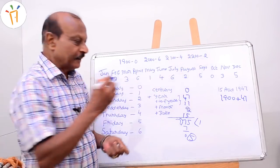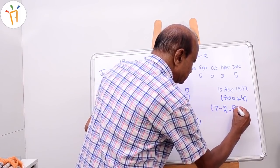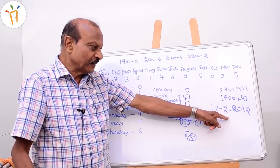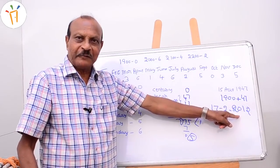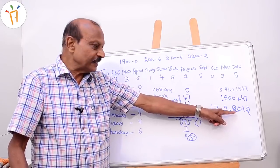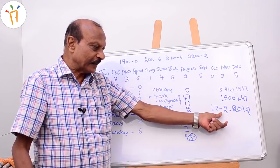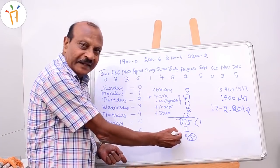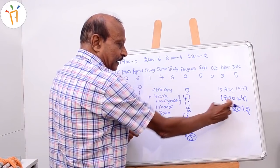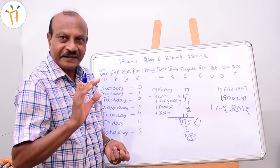Let me give one more example: 17th February 2012. You need to calculate the day of the week. 2012 is a leap year — if you divide it by 4 and the remainder is 0, we call it a leap year. When calculating for a leap year, if you are finding the day for January or February, you must subtract one from the total. If the year is a leap year and you are calculating for January or February, minus one from the total. Otherwise there is no necessity.